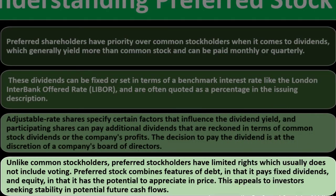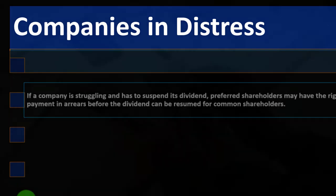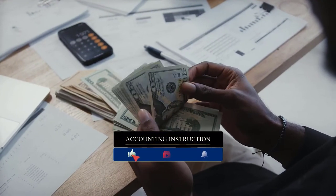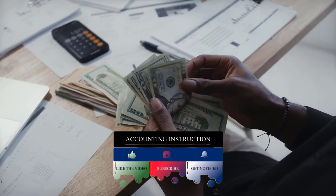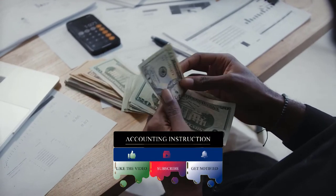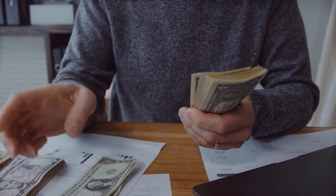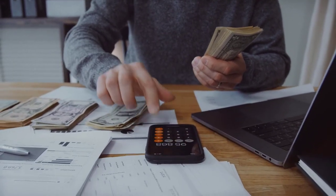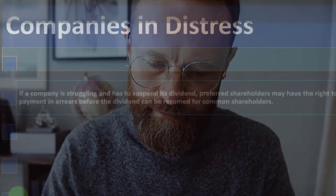Preferred stock combines features of debt — in that it pays fixed dividends — and equity — in that it has the potential to appreciate in price. This appeals to investors seeking stability and potential future cash flows. If you want more of a fixed income component, preferred stock gives you that fixed income feel. It occupies an in-between zone from an investment standpoint.